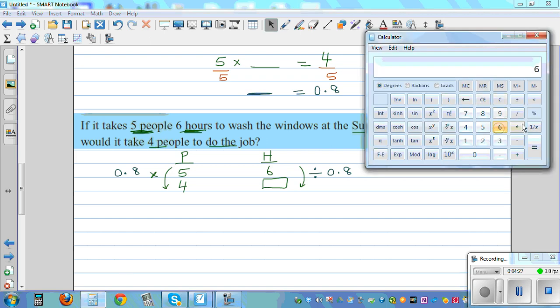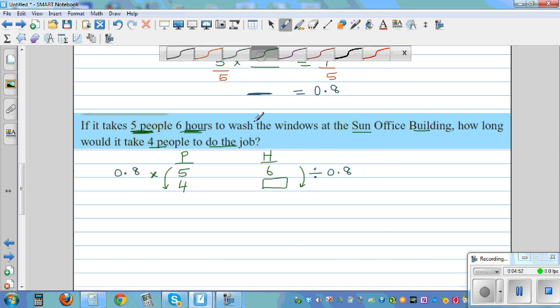Let's do 6 divide by 0.8. 6 divide by 0.8 is 7.5. Sorry, I made a mistake. 6 divide by 0.8 equals 7.5. So the answer is 7.5.